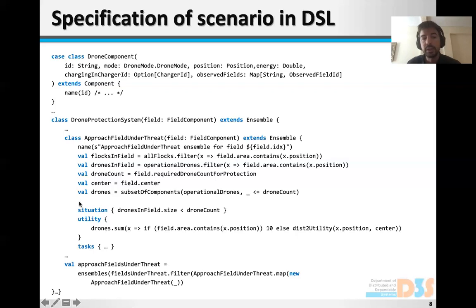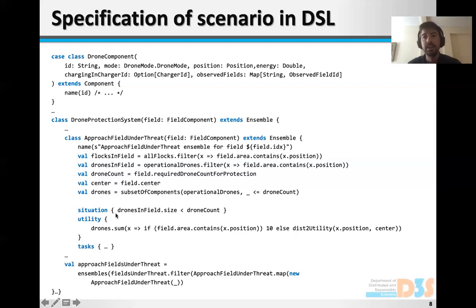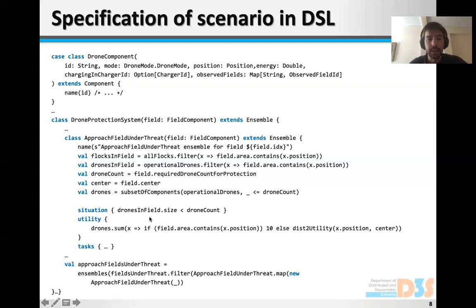A construct that we have in our language is that of a situation. We only form the ensemble when this situation holds. In this case, it is basically that the number of drones that are over the field is less than the number of drones that are needed, which is this line here.